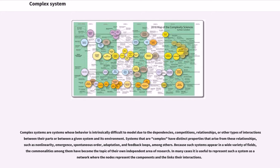Systems that are complex have distinct properties that arise from these relationships, such as non-linearity, emergence, spontaneous order, adaptation, and feedback loops, among others. Because such systems appear in a wide variety of fields, the commonalities among them have become the topic of their own independent area of research. In many cases it is useful to represent such a system as a network where the nodes represent the components and the links their interactions.